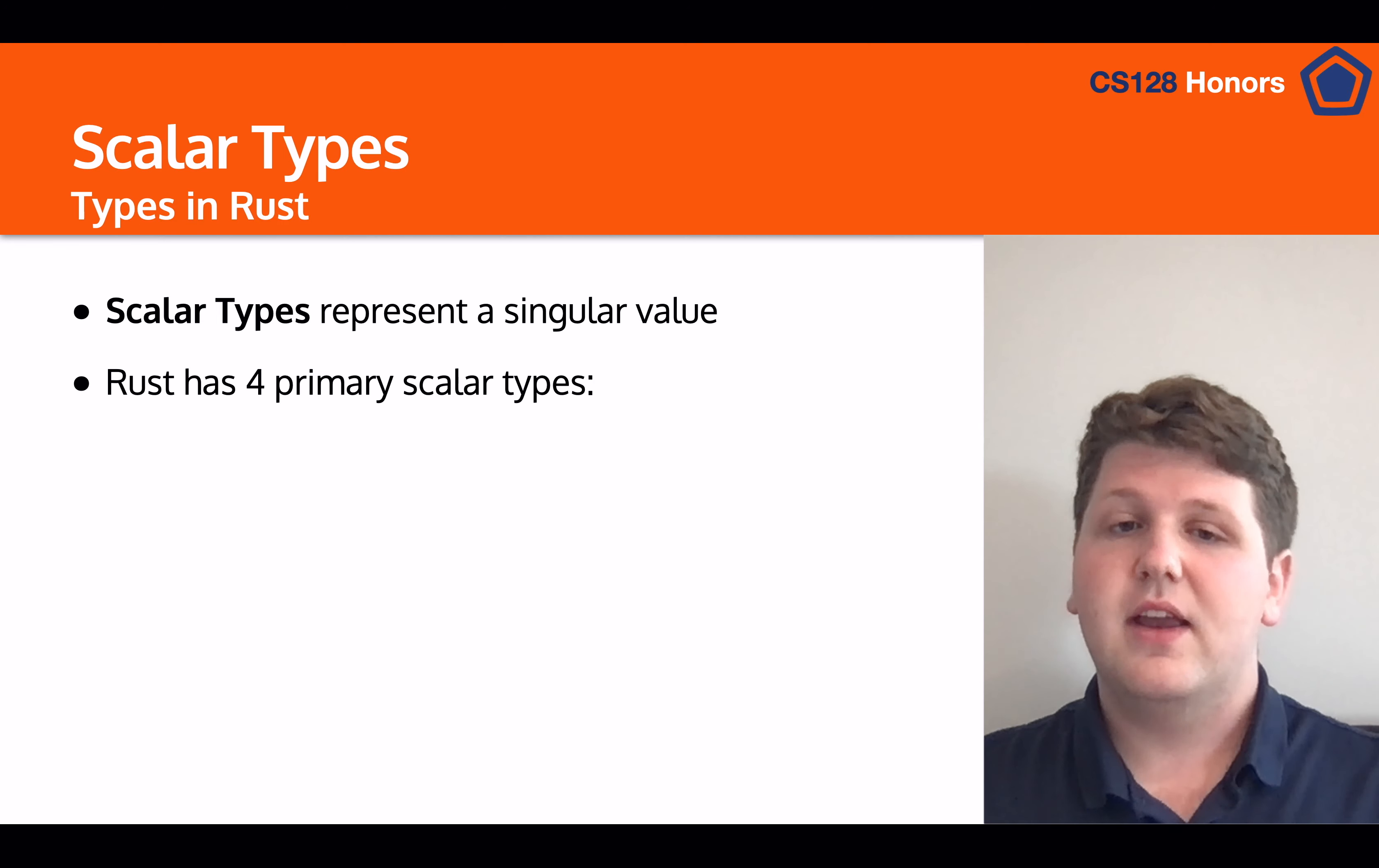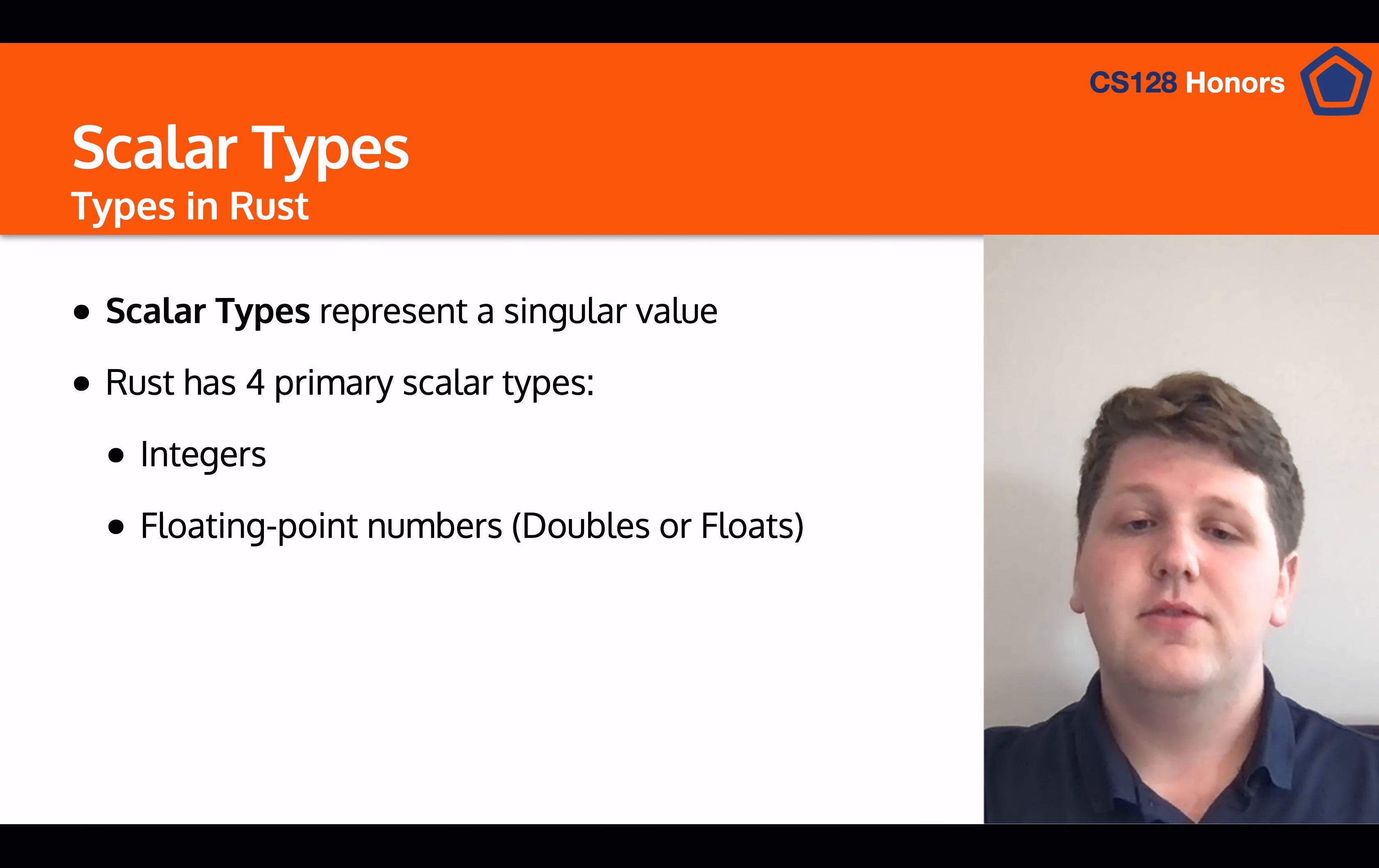So in Rust, scalar types represent a singular value. This is like a primitive type in Java or C++. And Rust has four primary scalar types: Integers, floating point numbers, which are doubles or floats in other languages, Booleans, and then characters.